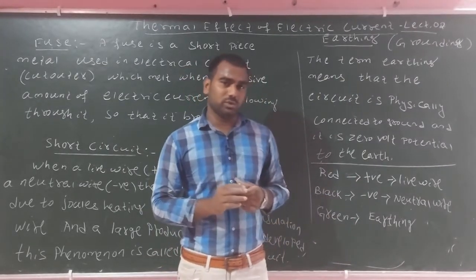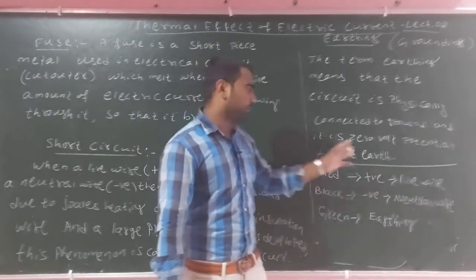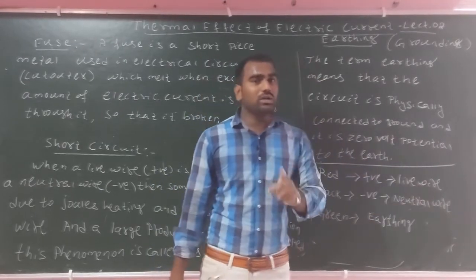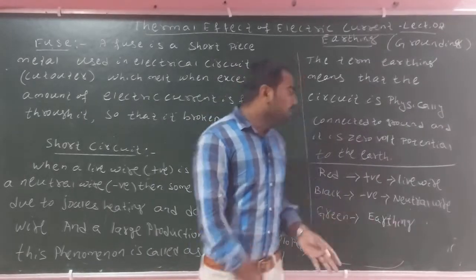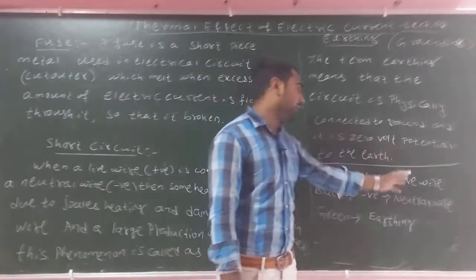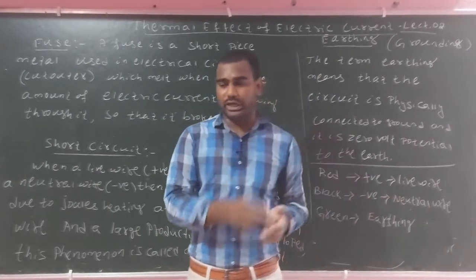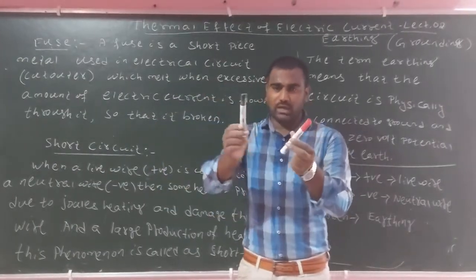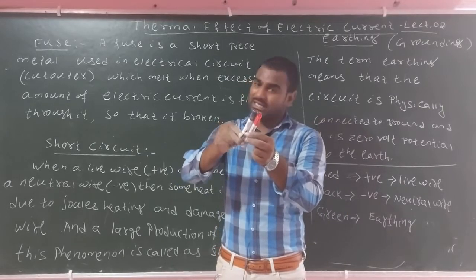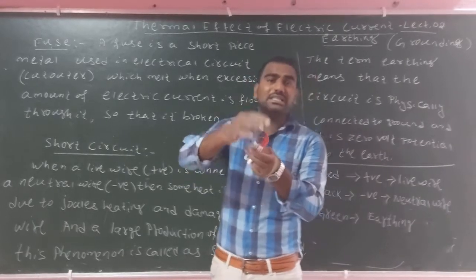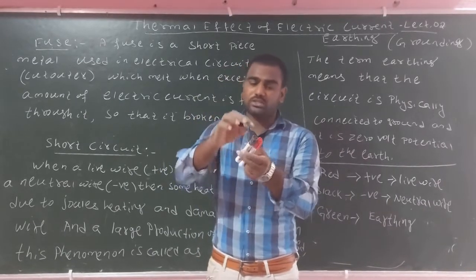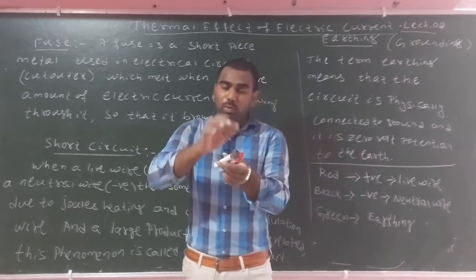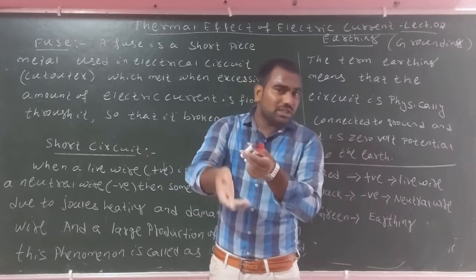We have a red color wire which is the positive or live wire. Then there is a negative or neutral wire. The green color wire is the earth wire. The positive is the live layer, the negative layer is neutral. If the insulation is damaged, it comes into contact with another wire, producing heat due to Joule heating.